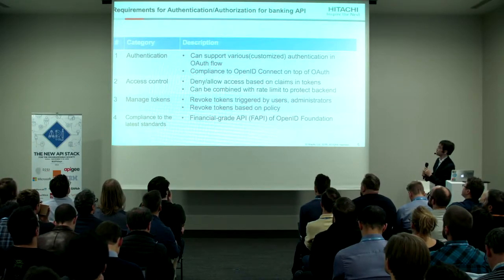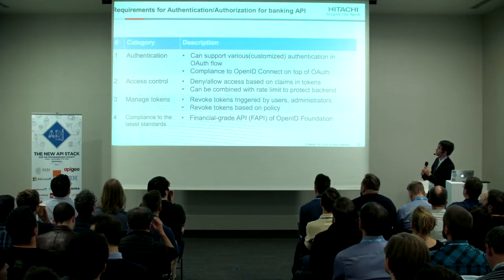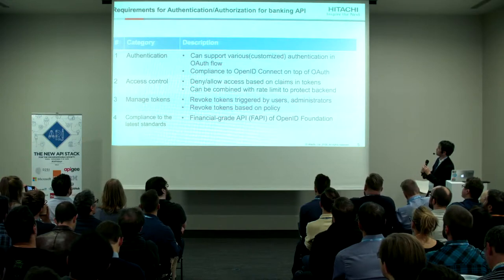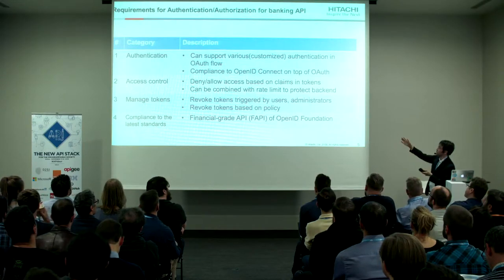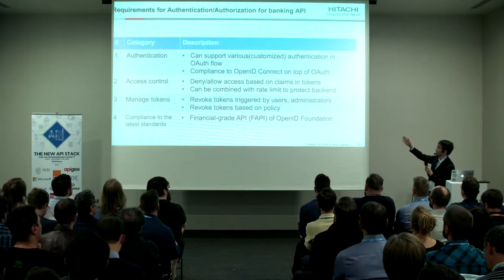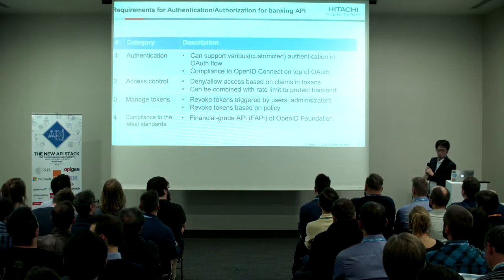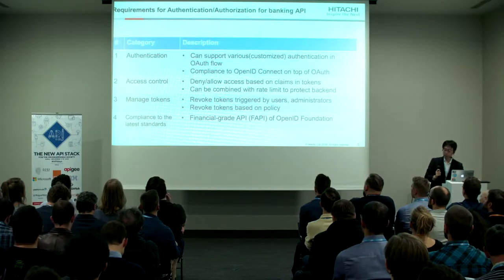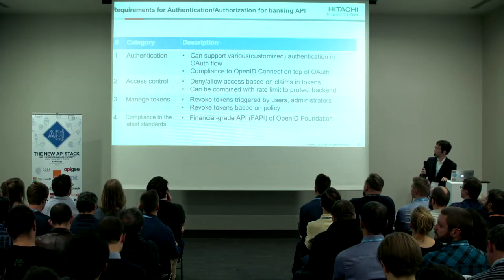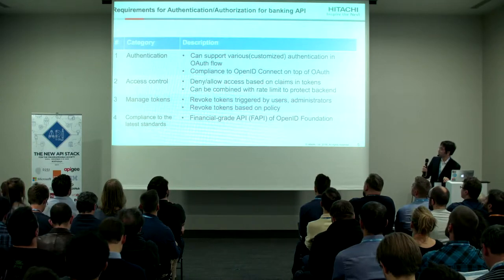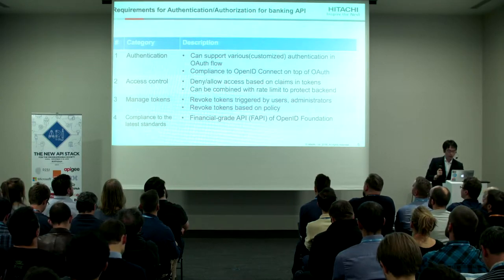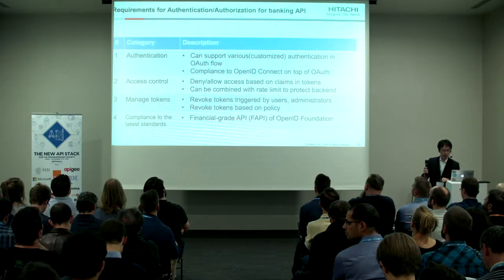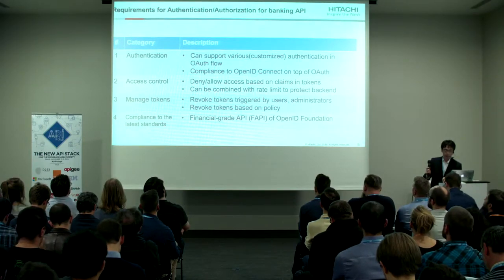The first requirement is authentication. We have to support very customized authentication in the OAuth flow, and also we have to use OpenID Connect on top of OAuth. The second requirement is access control — we have to deny and allow access based on claims in tokens, and we can combine access control with rate limiting.